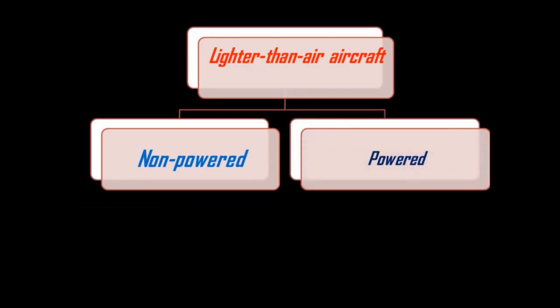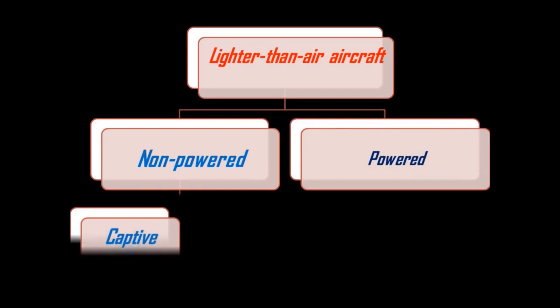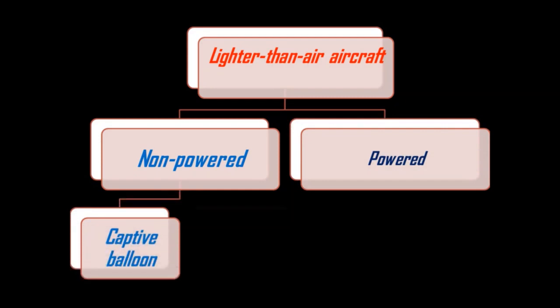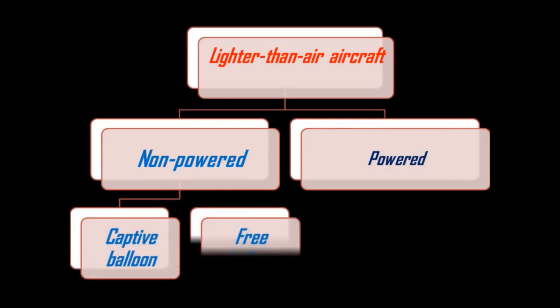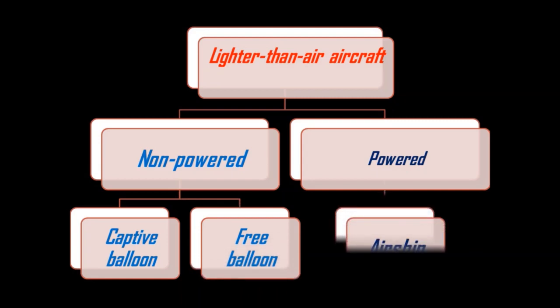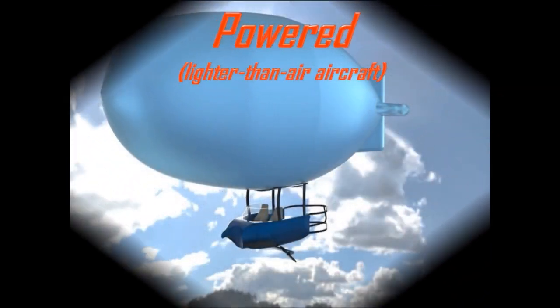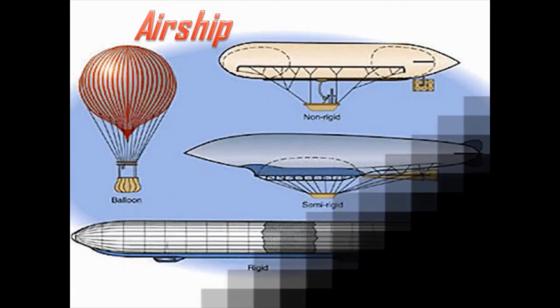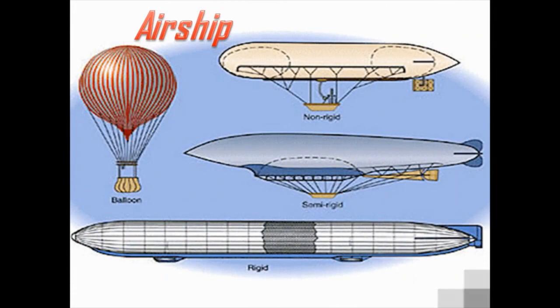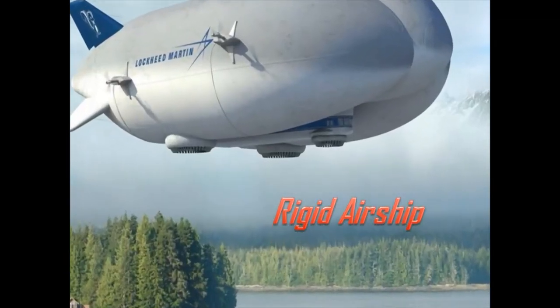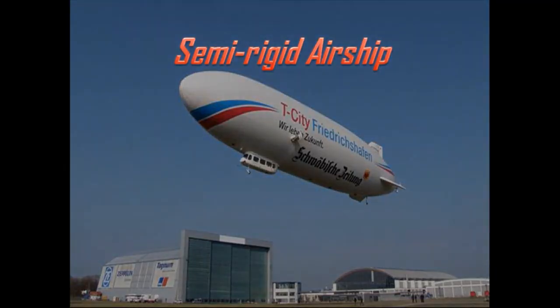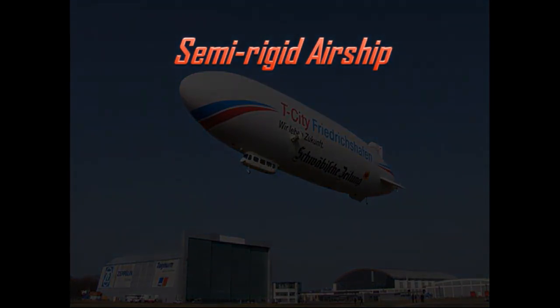Lighter-than-air aircraft are basically of two types: non-powered aircraft and powered aircraft. Non-powered aircraft are captive and free balloons. Powered lighter-than-air aircraft are known as airships. There are four types of airships: rigid airships, semi-rigid airships, and non-rigid airships.